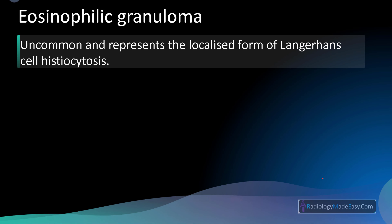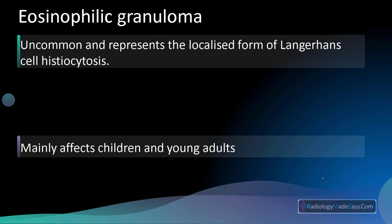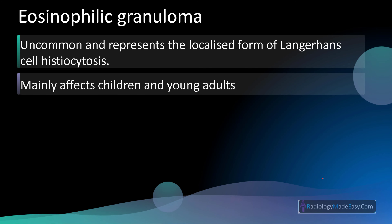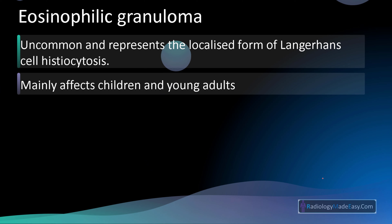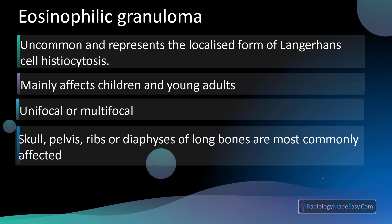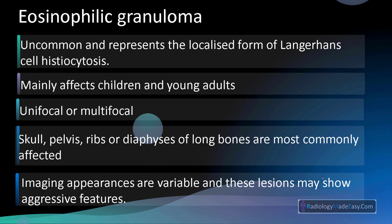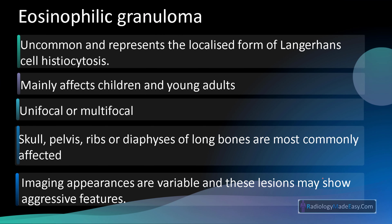Eosinophilic granuloma is uncommon and represents the localized form of Langerhans cell histiocytosis. It mainly affects children and young adults. It can be either unifocal or multifocal. The skull, pelvis, ribs, or diaphysis of long bones are most commonly affected. Finally, the imaging appearances are variable, and these lesions may show aggressive features.